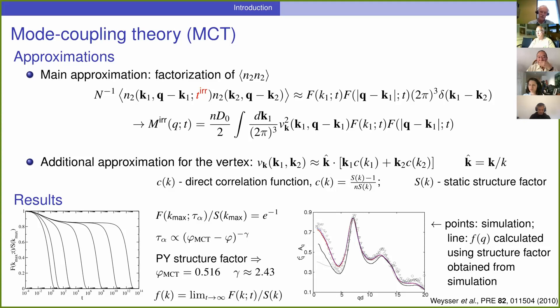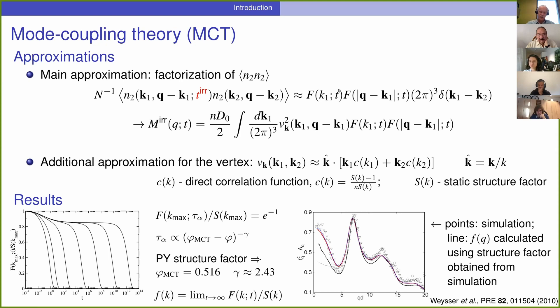The main approximation of mode coupling theory is the factorization approximation, namely that the pair-density correlation function is approximated by a product of density correlation functions. I should mention that factorization approximations are encountered in other areas of theoretical physics and are usually interpreted as some kind of mean-field-like approximation. There were already from the very beginning many people who referred to mode coupling theory as the mean-field theory of the glass transition. Once this approximation is made, we can express the memory function in terms of the scattering functions, and with additional technical approximations we get a closed system of equations that can be solved.